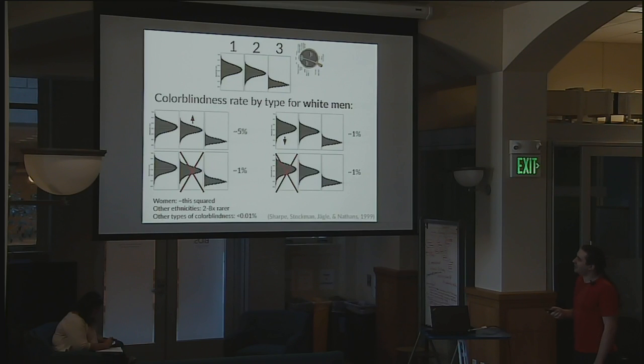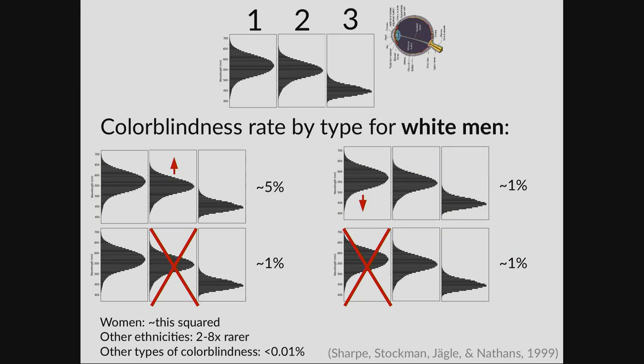You might also look at this and think it's a really weird way to design a visual system. Why do you have two sensors that are almost identical, and why do those get messed up in all these different ways that all have similar effects, while other kinds of damage are a thousand times rarer? What's going on here?